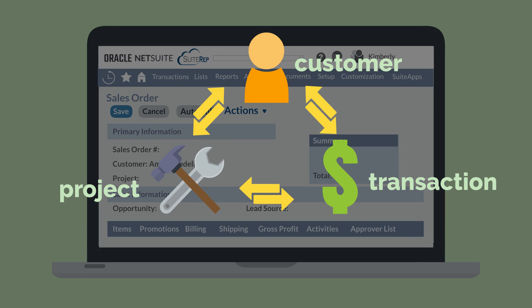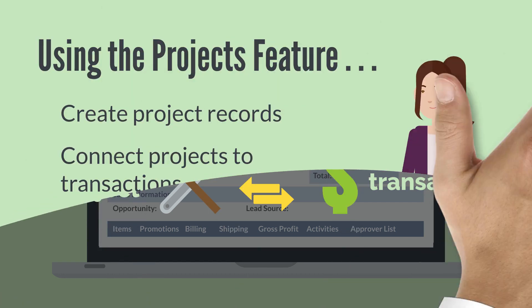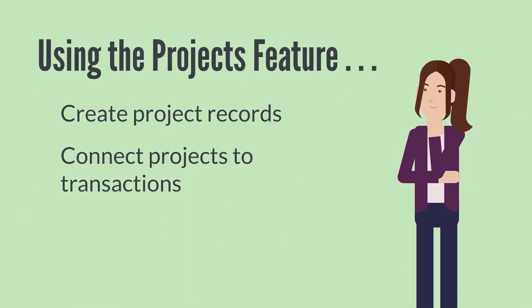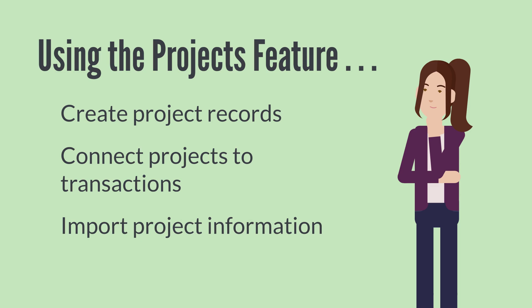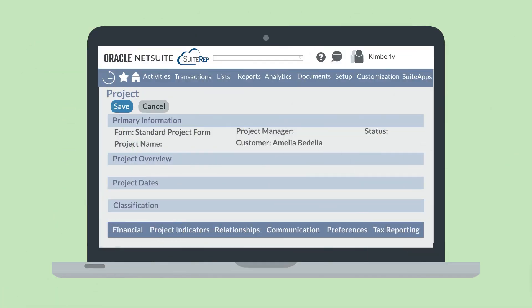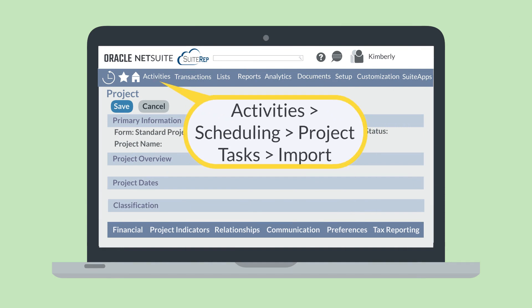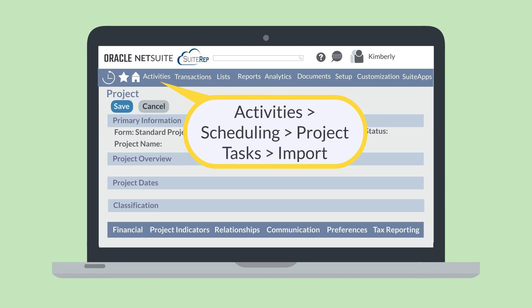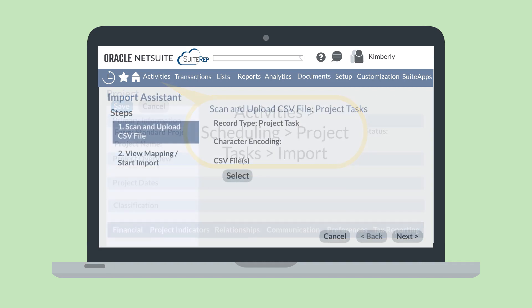Perhaps you keep track of key project information outside of NetSuite, but you still need to have the information tracked in NetSuite as well. You can bring that project information into NetSuite using a CSV import. Running a CSV import for projects, however, looks a bit different than a regular CSV import. Rather than accessing the CSV import assistant through the setup tab, you need to navigate to activities, scheduling, project tasks, import. Doing this will take you to a modified import assistant page. All you need to do to import your project information into NetSuite is to follow the instructions.